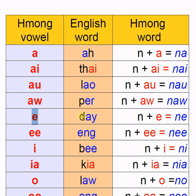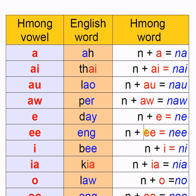The next vowel is É, like 'D'. The Hmong example word is Nai. Then there is ÁNG — similar to 'Ing' but it is ÁNG. The Hmong example word is Nang.